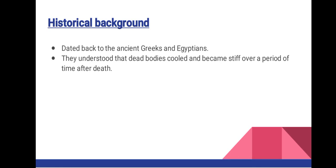Methods of estimating post-mortem interval date back to the ancient Greeks and Egyptians during the third and fourth centuries. They understood that dead bodies cooled and became stiff over time. Their signs were: a body that is warm and not stiff has been dead no more than a couple of hours; warm and stiff means a couple of hours to half a day; cold and stiff means half a day to two days; and cold and not stiff means more than two days. They used algor mortis and rigor mortis.